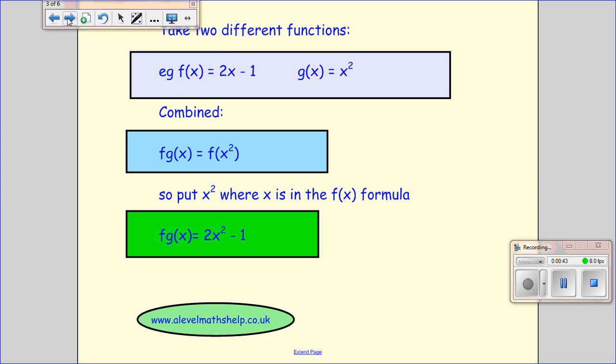So let's just have a little look at a question. So we've got two different functions. We've got f of x equals 2x minus 1 and g of x equals x squared. So we want to find f of g of x. So first of all we want to know what g of x is.